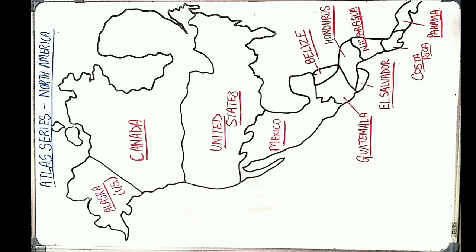Alaska was purchased for 7.2 million dollars. Other countries you can see are Canada, then the United States, Mexico, Belize, Guatemala, Honduras, El Salvador, Nicaragua, Costa Rica, and Panama — so these are 12 countries in North America.